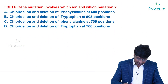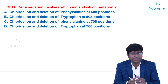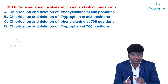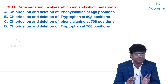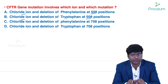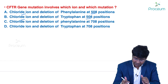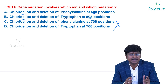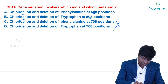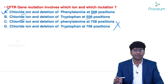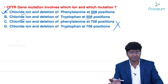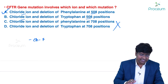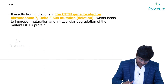The next question is about CFTR gene mutation in cystic fibrosis. The mutation involves the chloride ion channel. All options list chloride ion, but the key distinction is the amino acid deletion: it is a deletion of phenylalanine at position 508 (ΔF508), not tryptophan. The CFTR gene is located on chromosome 7.